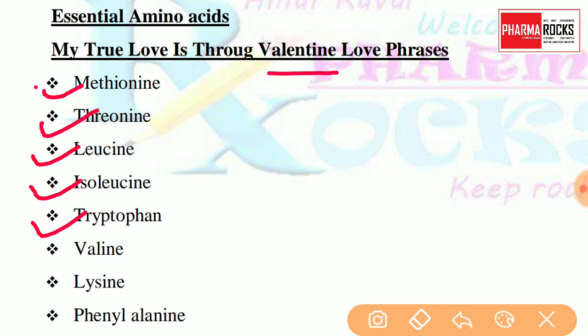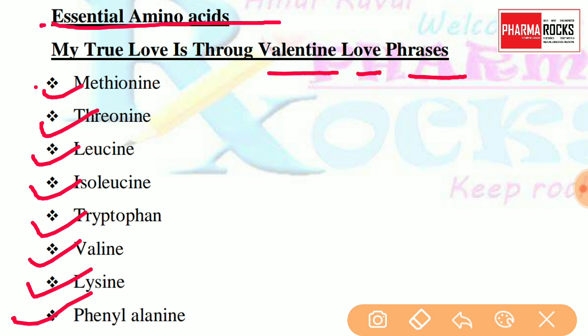Continuing the Essential Amino Acids trick with 'My True Love is True Valentine Love Phresis': Valentine gives Valine (the spelling V-A-L-I-N-E matches V-A-L-E-N from Valentine), Love gives Lysine, and Phresis gives Phenylalanine. Any remaining amino acids not in this mnemonic can be classified as Non-Essential. So this trick covers all Essential Amino Acid classifications.